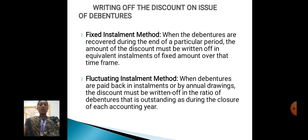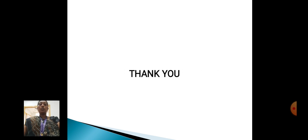Fluctuating installment method: when debentures are paid back in installments or by annual drawings, the discount must be written off in the ratio of debentures that are outstanding during the closure of each accounting year. Thank you.